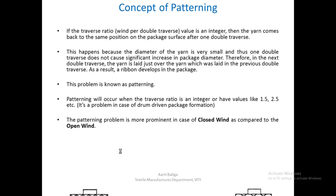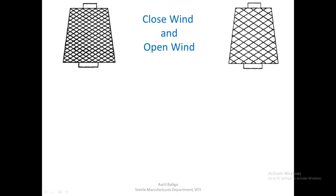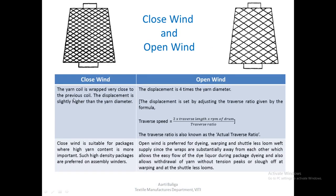Let us see what is closed wind and open wind. In a closed wind, the yarn coil is wrapped very closely to the previous coil — the displacement is slightly higher than the yarn diameter, so the coils are laid very, very close to each other. Whereas in case of an open wind, the displacement is 4 times the yarn diameter — one coil to the next has a large distance between them, almost equal to 4 times the yarn diameter.